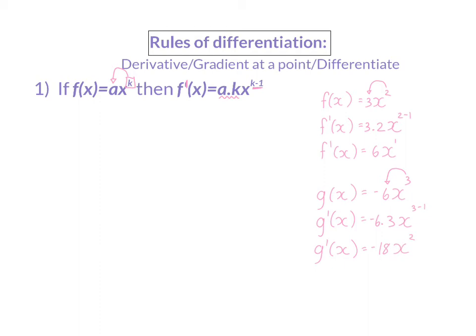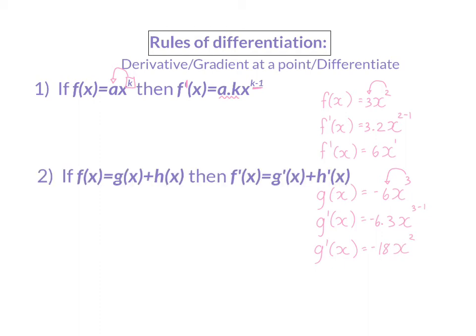The second rule states that if a function consists of more than one term, each term can be differentiated on its own. Therefore, rule 1 can be applied per term. And if we now go and have a look at g, we will see that it consists of three terms, and we can now differentiate each term on its own.